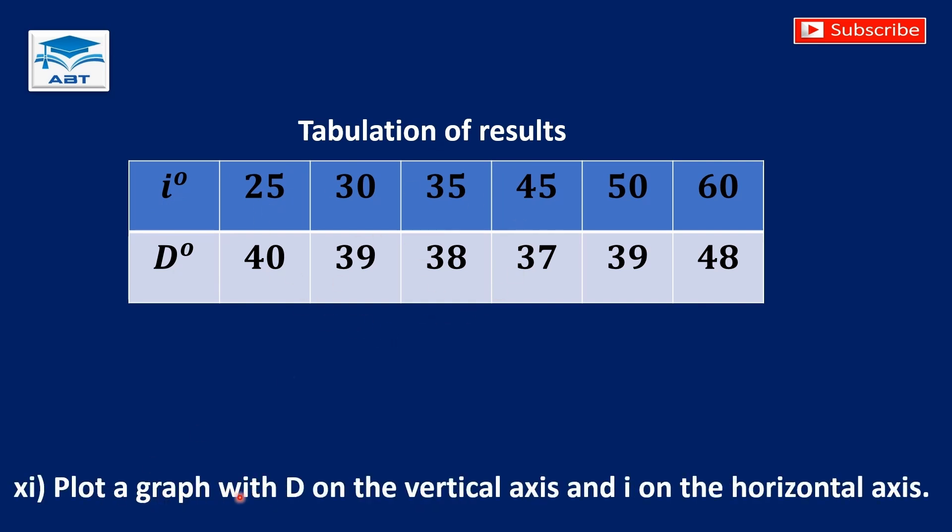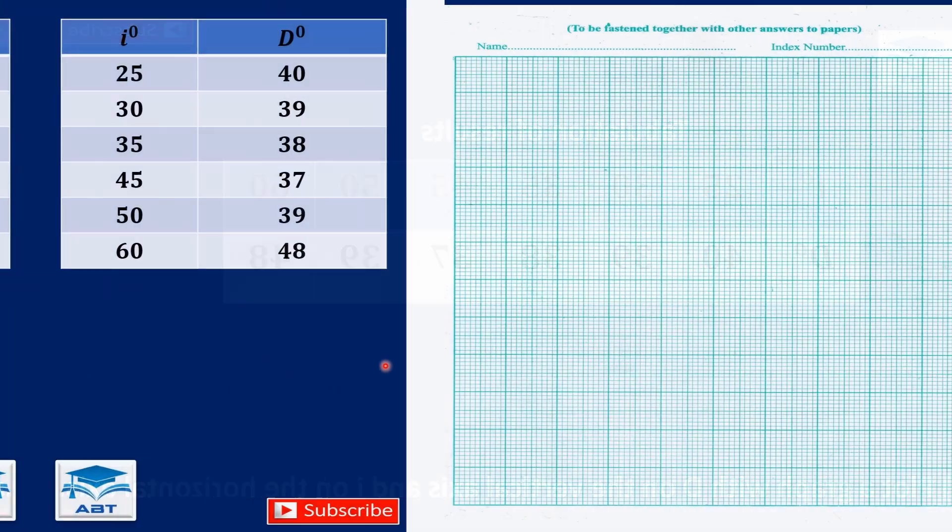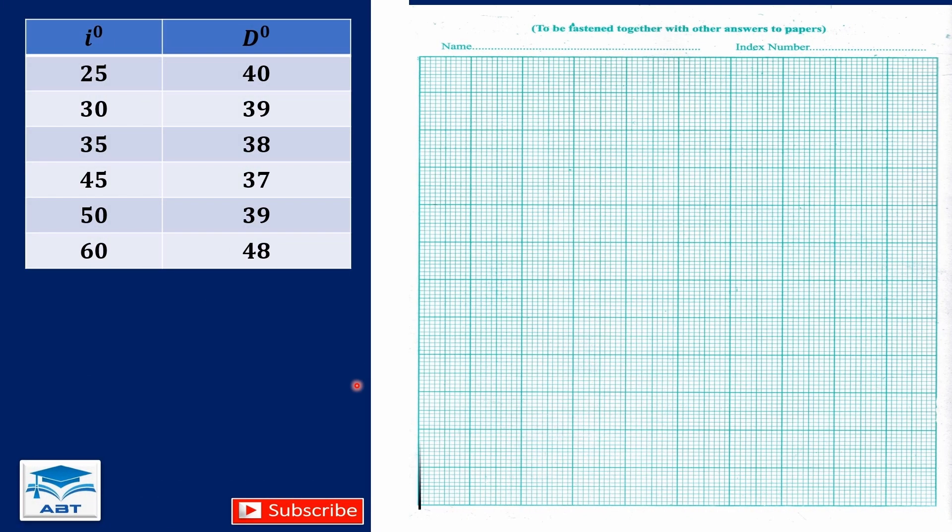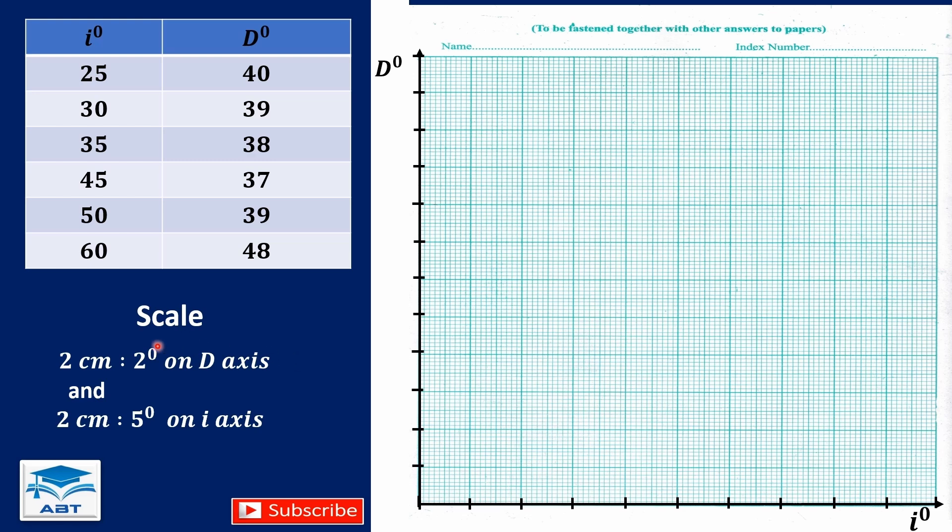Plot a graph with D on the vertical axis and I on the horizontal axis. We draw the vertical and horizontal axis. We choose a scale. We are going to choose a scale of 2 centimeters to 2 degrees on D axis.